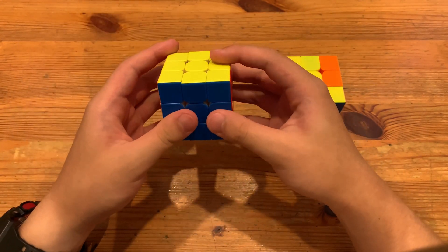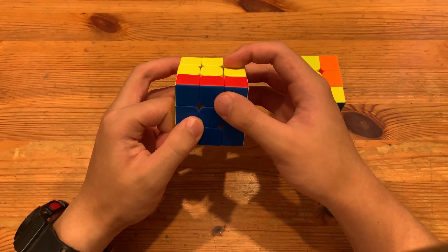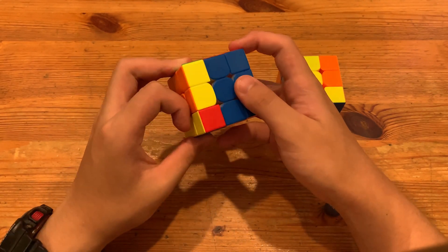There is barely a grip shift since after you do the F prime, your left thumb is in position for the lefty moves.